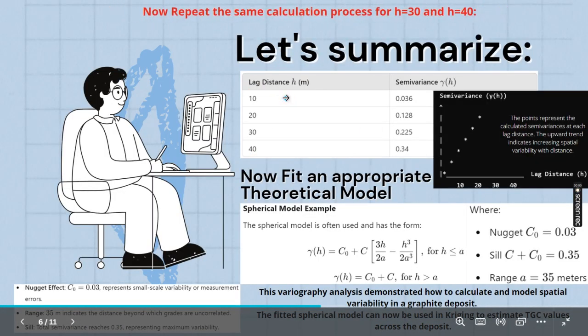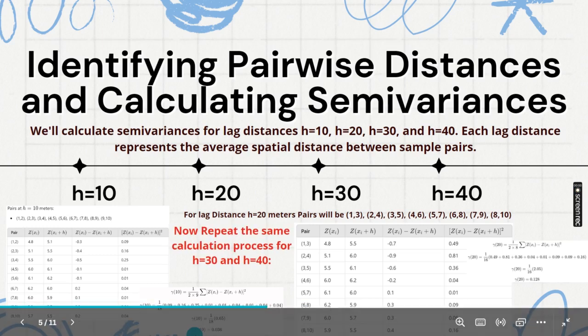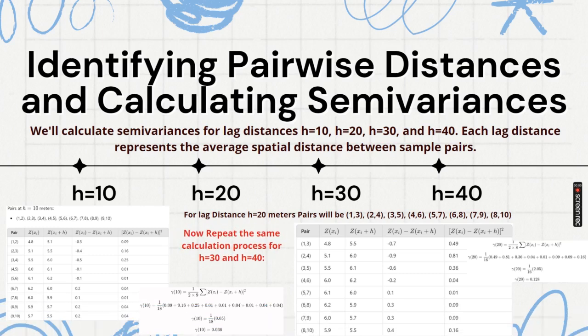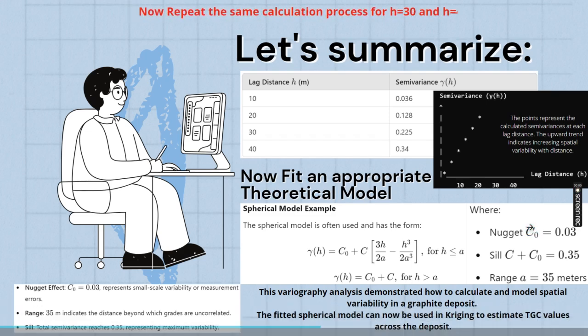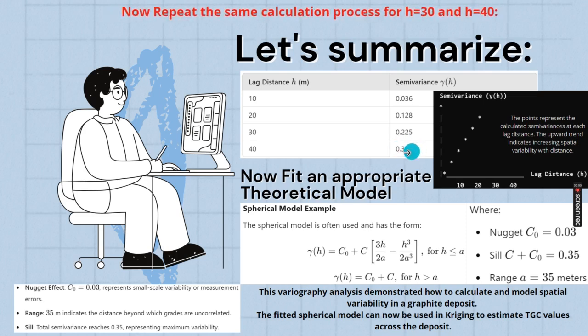For lag spacing, as I have shown, for 10 meter it is becoming 0.036. For 20 meter lag spacing it is coming 0.128. Similarly for 30 and 40, it will become 0.225 and 0.334. Now you have to construct that semi-variance.